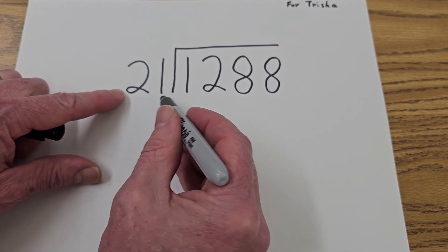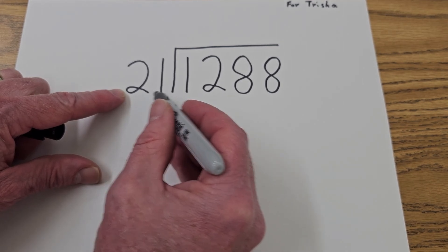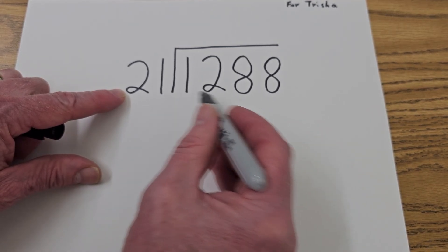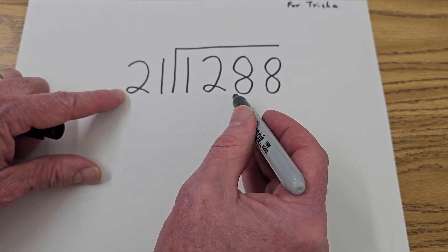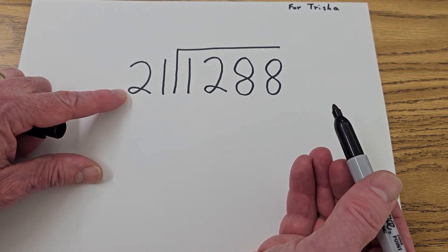Tricia, can I put 21 into 1? No, you can't. How about 21 into 12? Still too small. Can I put 21 into 128? I think so. So how many times?